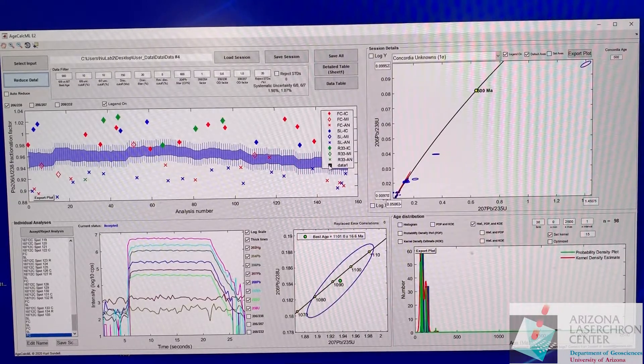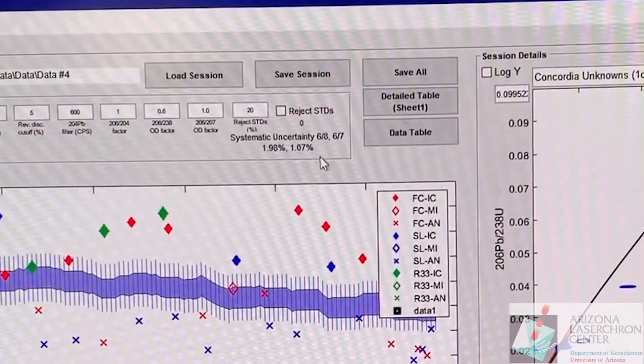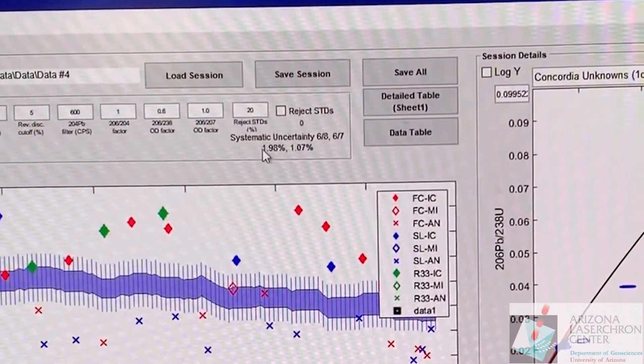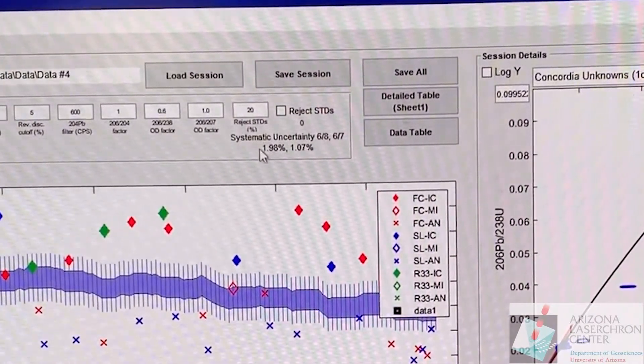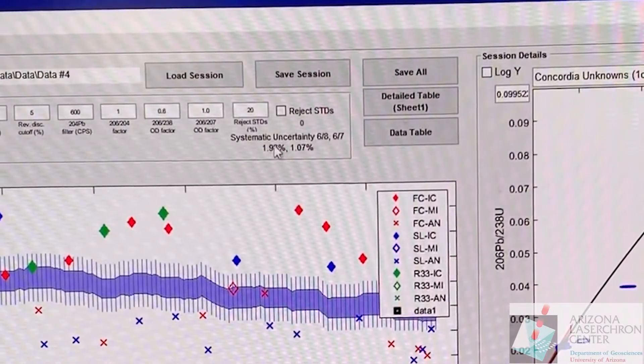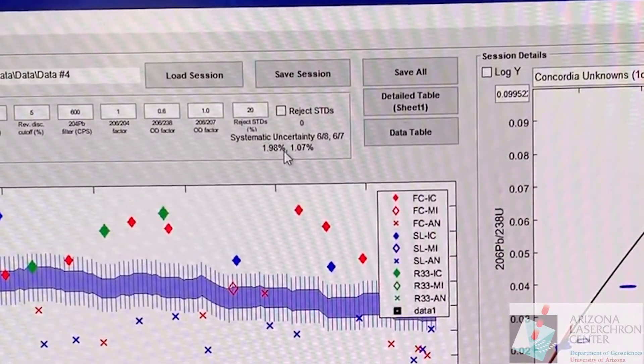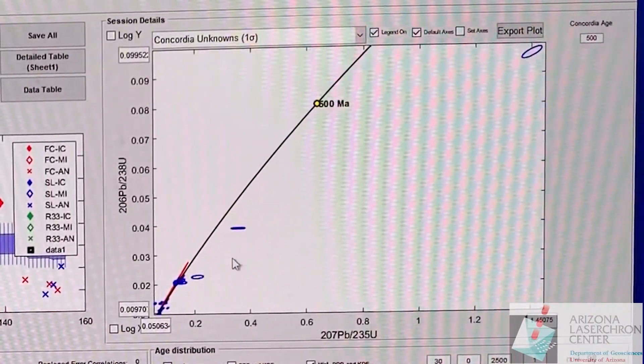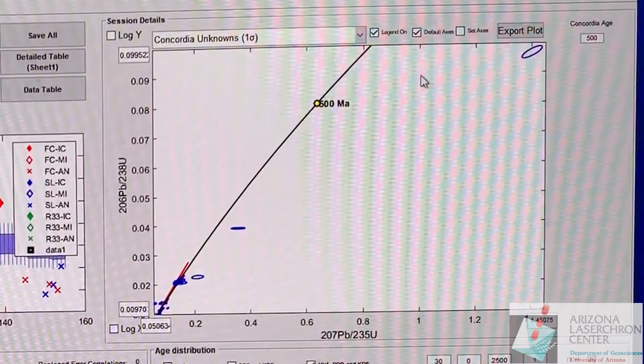This is what contributes to your systematic error. What I'm going to keep an eye on as I do some adjustments is right here, the systematic uncertainty for your 6.8 and 6.7. So 2% is a little high for 6.8. Let's first see if we can get that down.